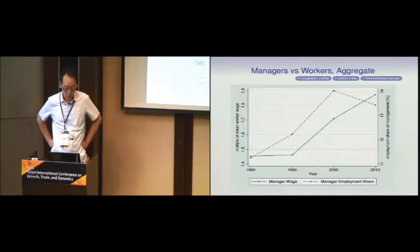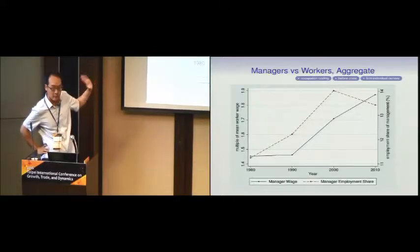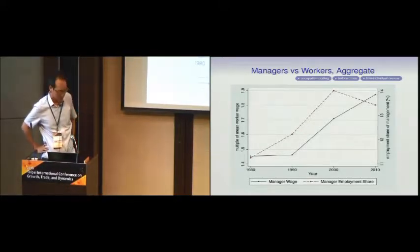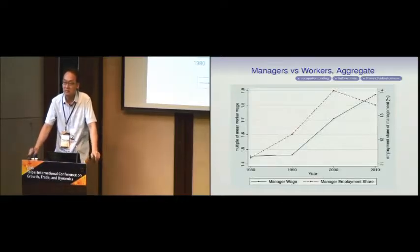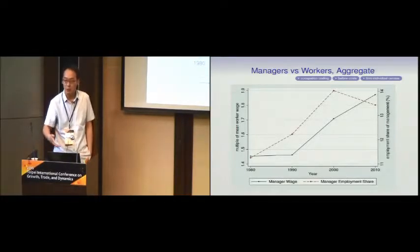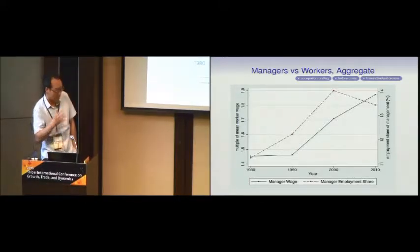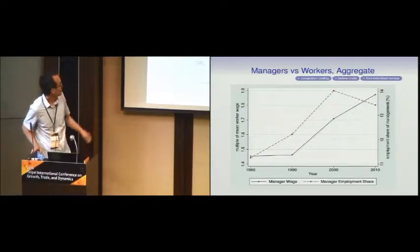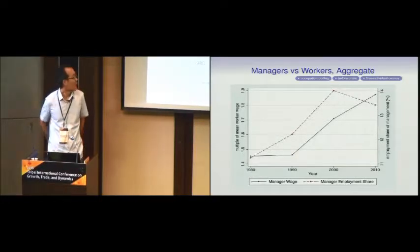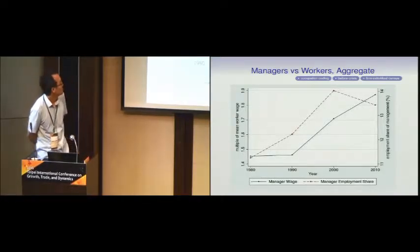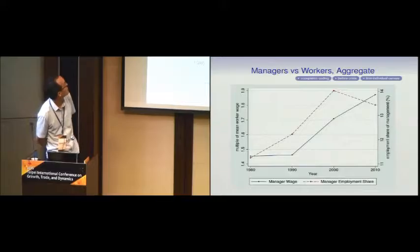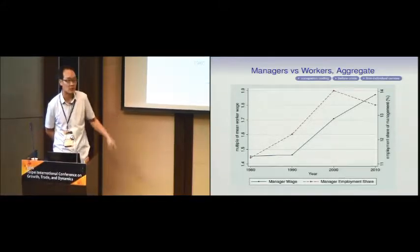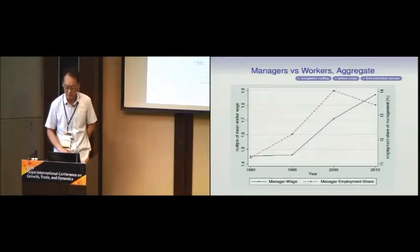Looking at the blue line in aggregate, regardless of sectors, the managerial wage premium — simply dividing managerial compensation by non-managerial worker compensation — was about 45% in 1980 and is now about 90%. The red line shows the share of managers: it used to be a little more than 11% and is now about 13.5%. The peak was in 2005, so there's something about the crisis affecting this structure, but we use 2010 census data.